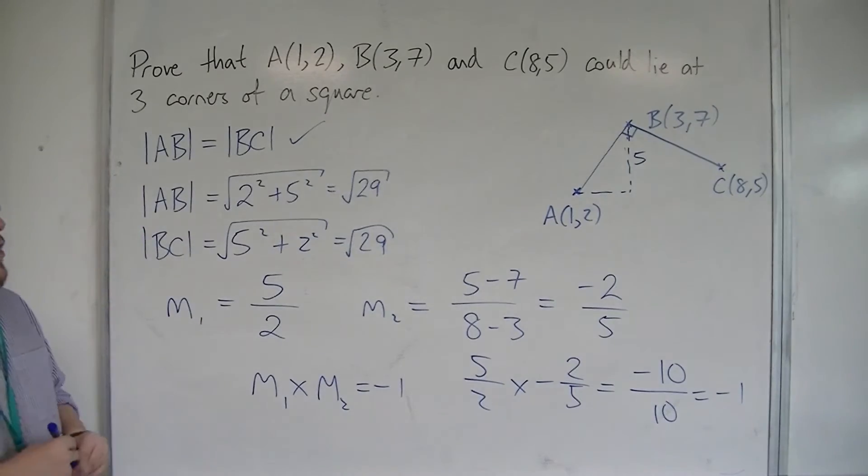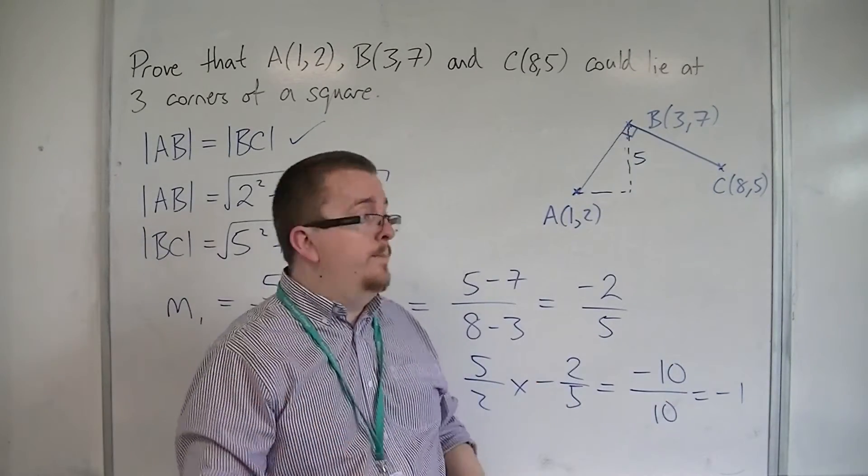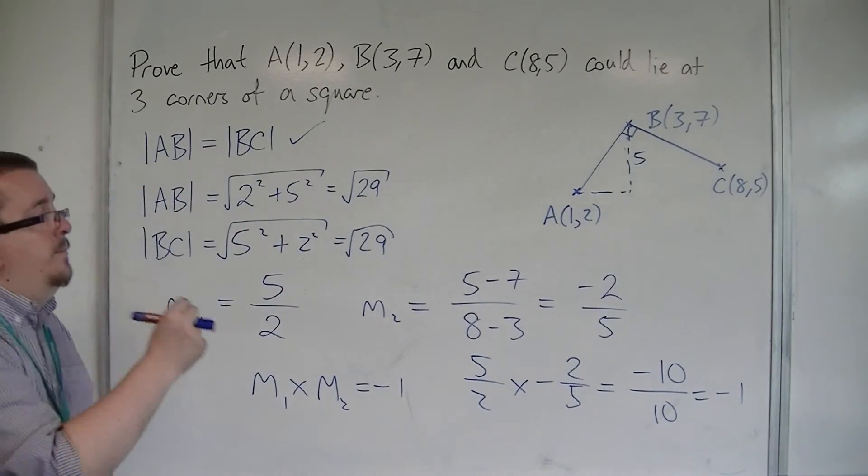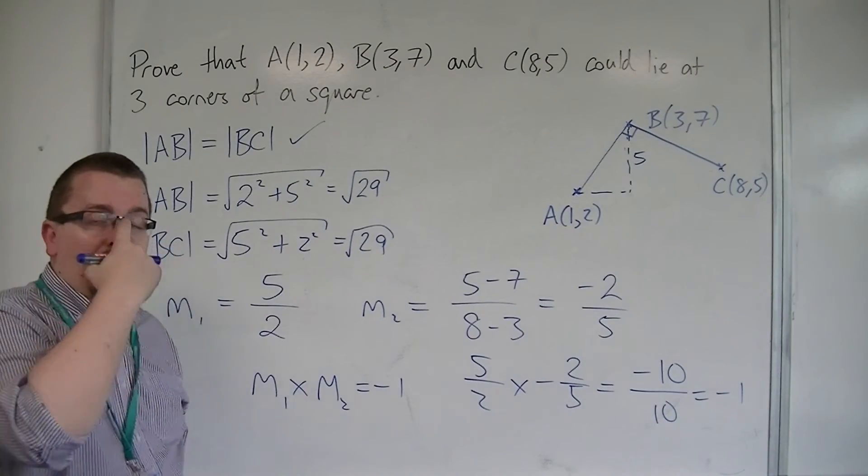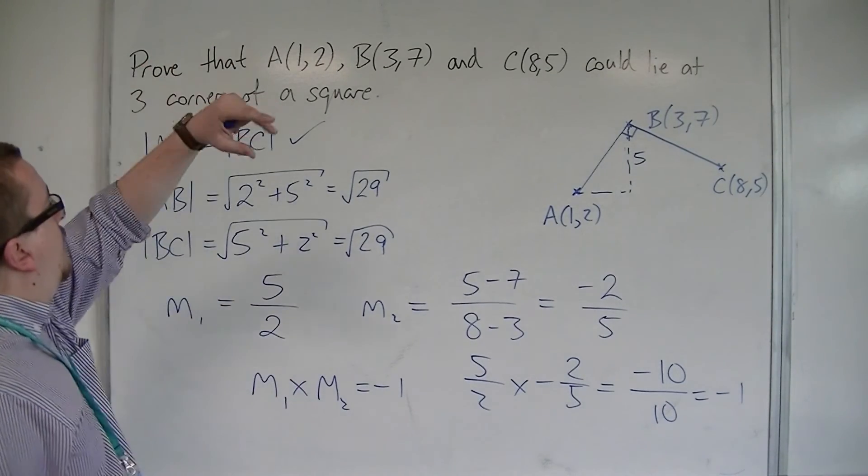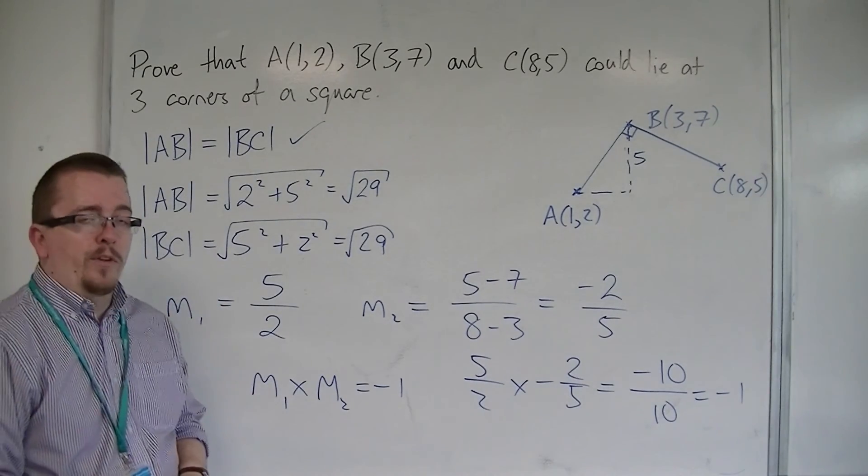And so, because the length of AB and the length of BC is the same, and because the two lines must be at a right angle, because the gradients are negative reciprocals to one another, that means that we have proved that A, B, and C could lie at three corners of a square.